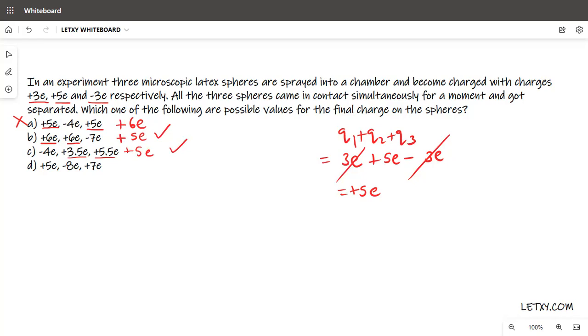Let's check the last option. 7 plus 5 equals 12, 12 minus 8 equals +4e. So definitely this should not be the option. Now there are two options, B and C. The correct answer is one of them, but you need to understand something.